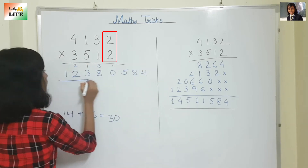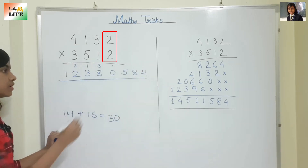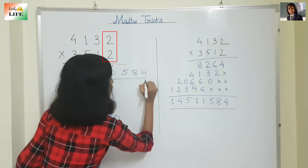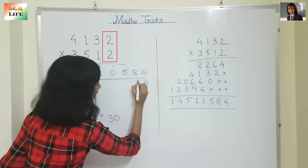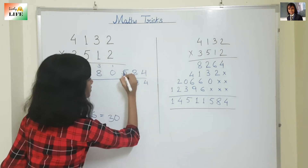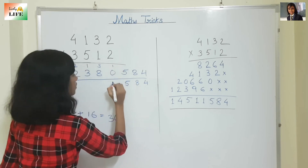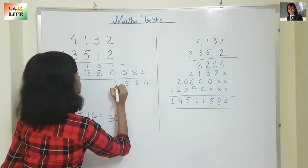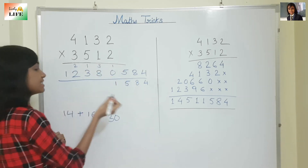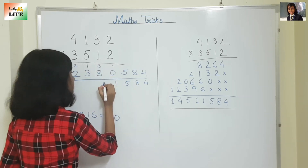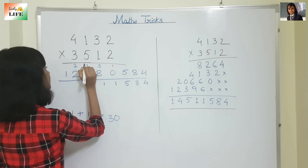Now we are going to add all of them: 4, 8, 5. 1 plus 1 is 2. 8 plus 3 is 11. So we write 1 and carry 1.